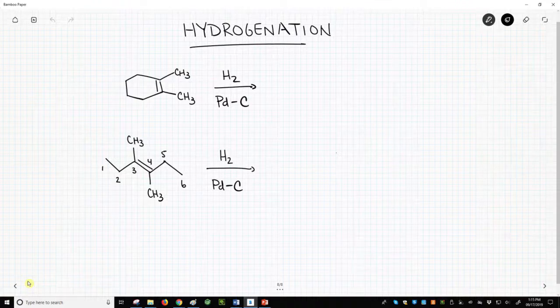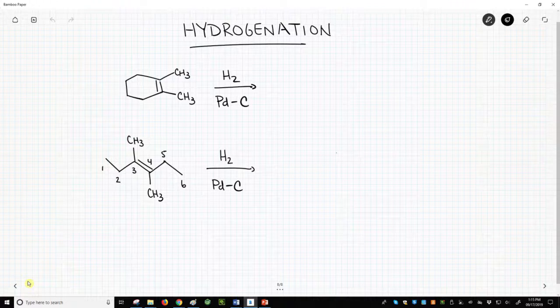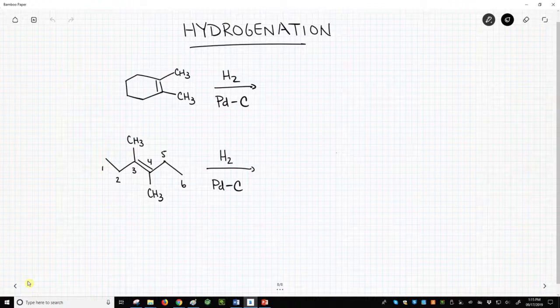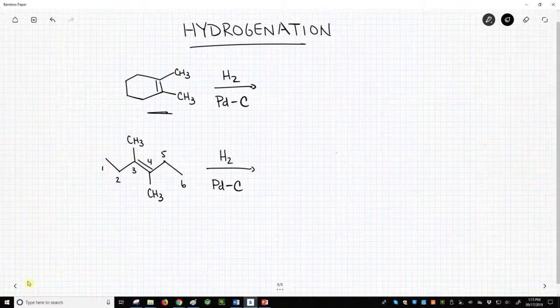Therefore, we will look at two sample reactions. They are both on the screen. The first has this cyclic alkene in the upper left reacting with H2 hydrogen gas in the presence of a catalyst – palladium on carbon.